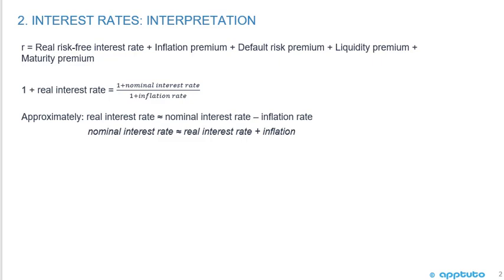There's also a liquidity premium — if there's some chance that I can't sell my investment or my money is tied up with no liquidity, that results in a liquidity premium. We see that sometimes with hedge funds. Plus a maturity premium: the longer I go out further in time, the more risk for inflation and other factors, so there's a maturity premium. The longer I need to wait to get my money back, sometimes that results in a premium.